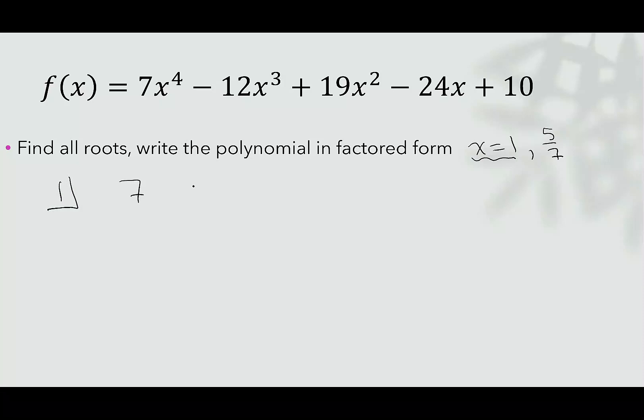Then I write the coefficients of all the terms of my polynomial. I write 7, -12, +19, -24, and +10. The first term always comes straight down, so I have 7. Then I multiply by the number in the box. 1 × 7 is 7, and then I add. I get -5. 1 × -5 is -5. 19 - 5 is 14.